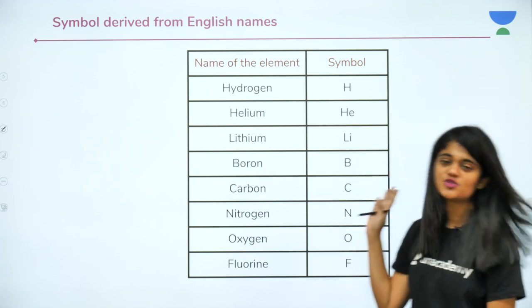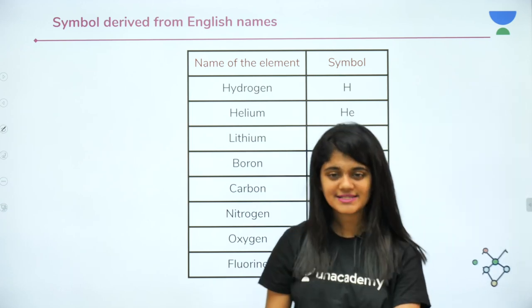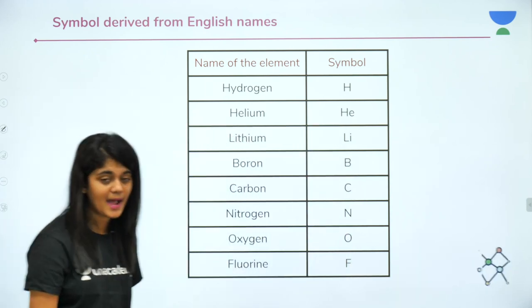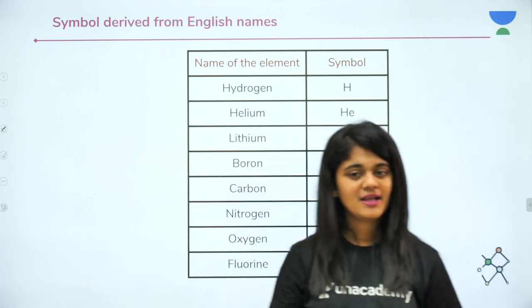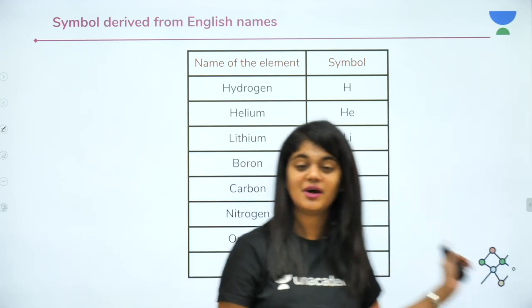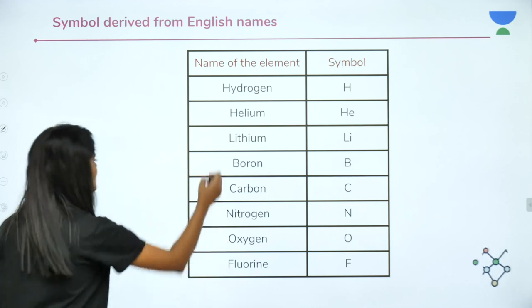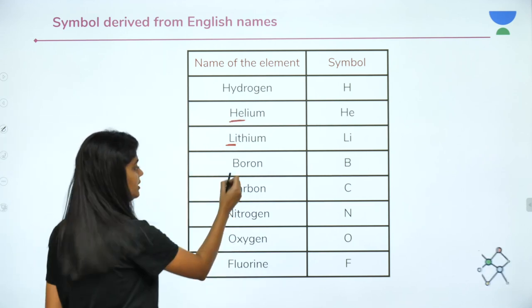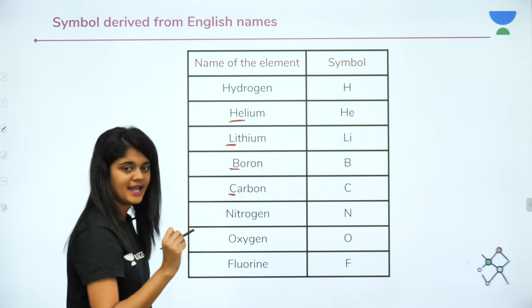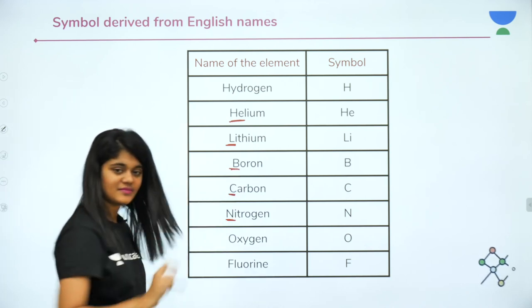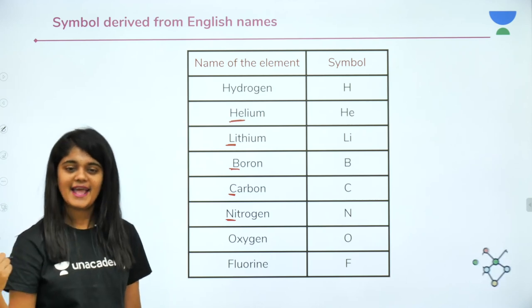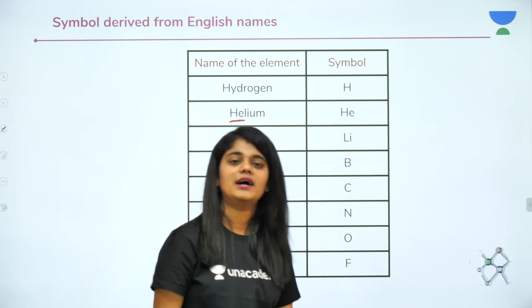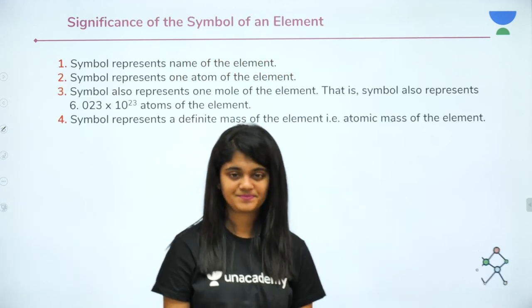Here is a table of elements starting from atomic number 1 with their symbols. Hydrogen is H, helium is He, lithium is Li — we use the first two letters. Boron is B, carbon is C, nitrogen is N, oxygen is O, fluorine is F. These are some of the elements whose symbols are derived from their English names.